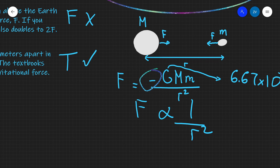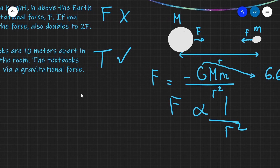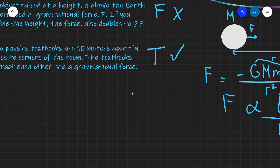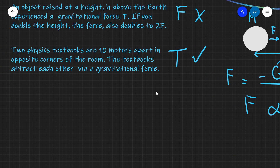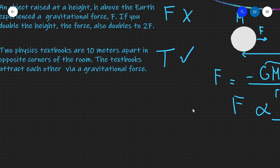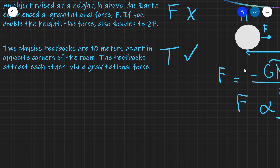Let's apply this law to an example question. One interesting case: if two physics textbooks are attracting each other, why aren't things flying around or clumping into one giant sphere? Let's do a calculation to find out.